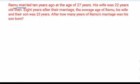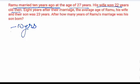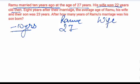The question says that Ramu married 10 years ago at the age of 27, and his wife was 22 years old then. We'll write it down. So the question is telling about 10 years ago, and we'll write minus 10 because it was 10 years ago. So Ramu's age at that time was 27 and his wife's age was 22.